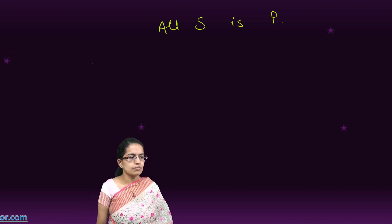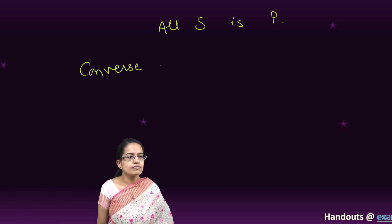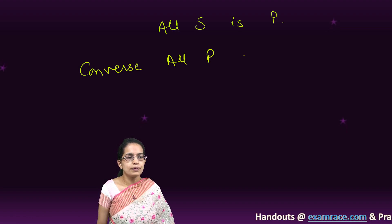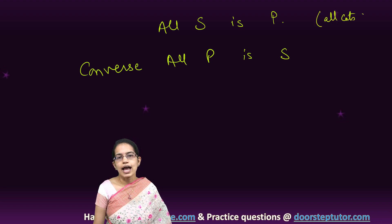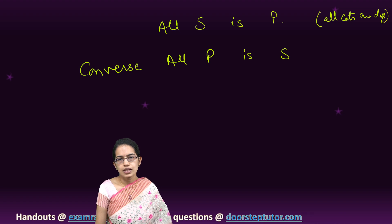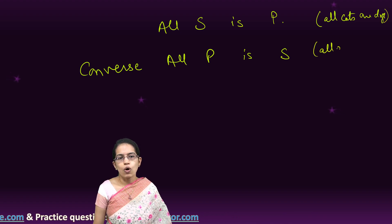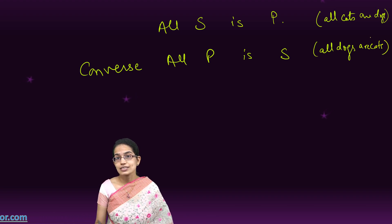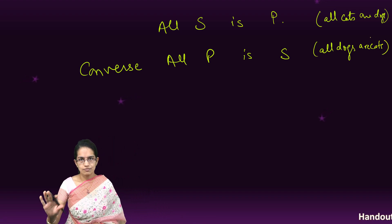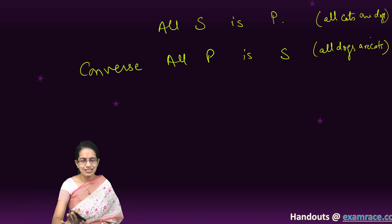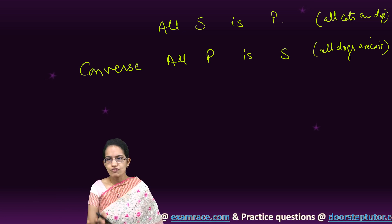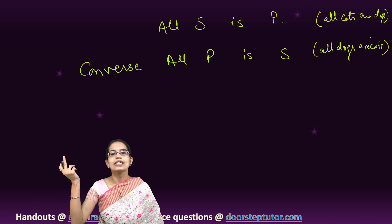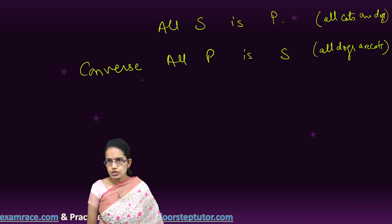Based on this statement, I write a converse of it. The converse statement would be 'All P is S.' For example, 'All cats are dogs' — the converse would be 'All dogs are cats.' Don't go into whether this is a valid form just yet; we would understand that in a while. Right now, we are focusing on what converse, obverse, and contrapositive are as a recap.